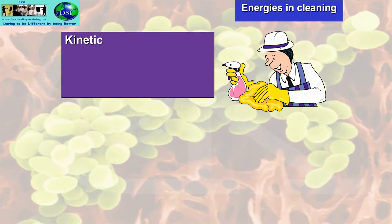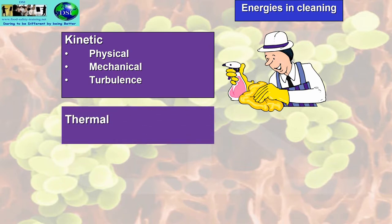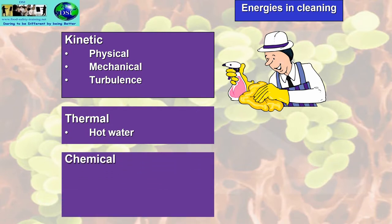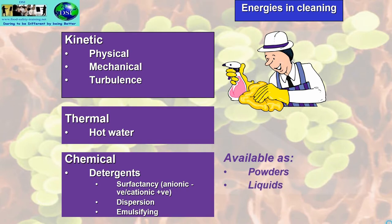The different energies in cleaning include kinetic, which is physical or mechanical, or the use of turbulence; thermal, for example hot water; and chemical, such as detergents, where you're looking at surfactancy — anionic, which is negative, or cationic, which is positive. These are available as powders, liquids, gels, and foams.